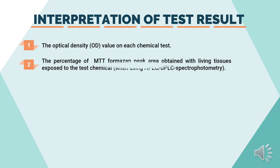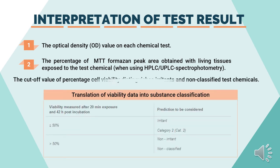The second method: if using HPLC-UPLC spectrophotometry, also known as ultra-high performance liquid chromatography, we can calculate cell viability using the percentage of MTT Formazan peak area obtained with living tissues exposed to the test chemical, relative to the MTT Formazan peak obtained with the concurrent negative control, which is set to 100%. From the cut-off value of percentage cell viability obtained, we can distinguish whether the test chemicals are irritant or non-classified. If viability is 50% or below, the test chemicals are predicted to be irritant, Category 2 UN GHS. If viability is more than 50%, they are classified as non-irritant or non-classified.